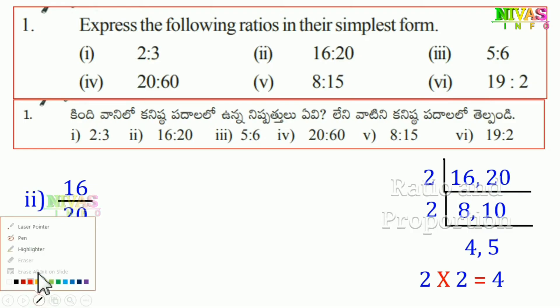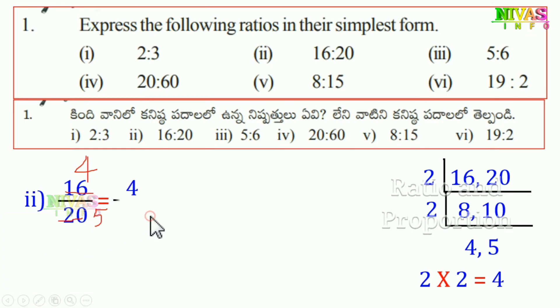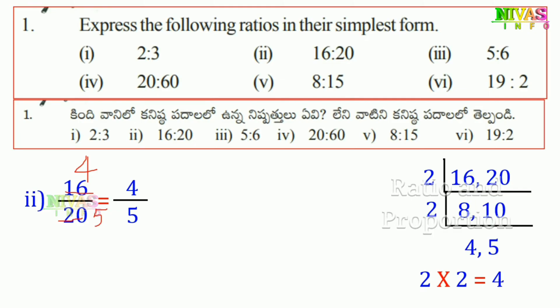2 times 2 equals 4. So within 4 we divide: 4 into 16 gives 4, and 4 into 20 gives 5. The simplest form is 4 is to 5.